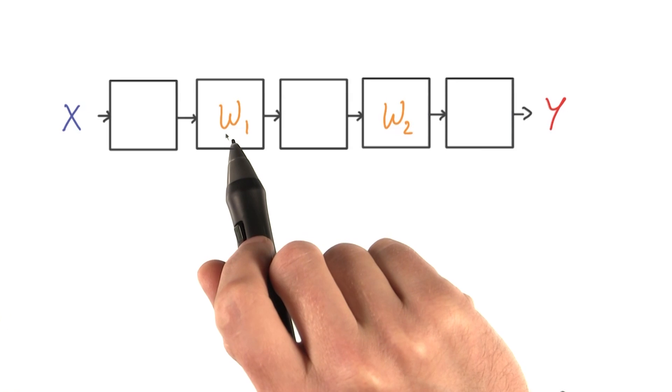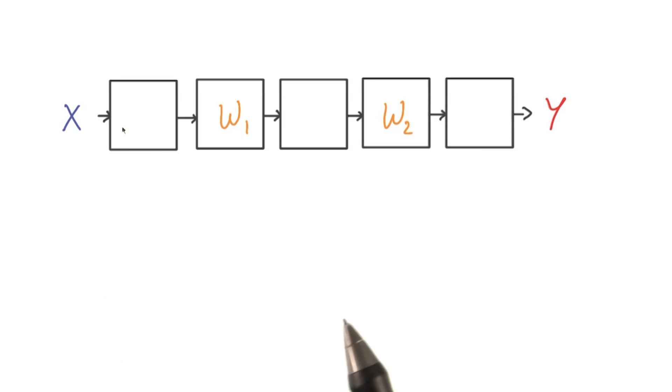Some have parameters, like the matrix transforms, some don't, like the ReLUs.